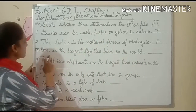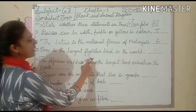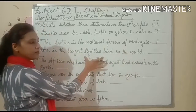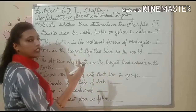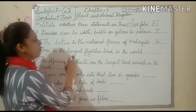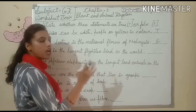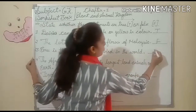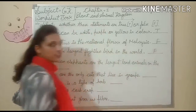Next, number 3: Emu is the largest flightless bird in the world. Flightless means it cannot fly. Is emu the largest flightless bird in the world? No — it is the ostrich.